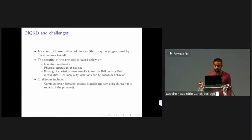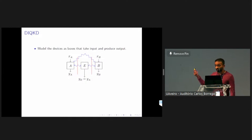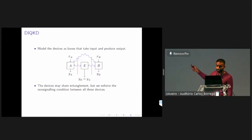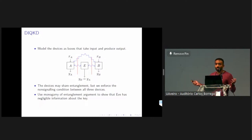Some of the challenges are that communication between the devices is public, and they still want to establish a shared secret key — correctness and security — and we want a protocol that's efficient and robust to noise. Typically in DIQKD, we model devices as boxes that take an input: Alice takes XA, Bob takes XB, and they produce outputs YA and YB. Eve is trying to guess Alice's output. The blue squiggly lines denote shared entanglement, and the red lines indicate they cannot communicate once they receive their inputs. Security is established using monogamy of entanglement, meaning if two parties are maximally entangled, no third party can have any correlations with them.